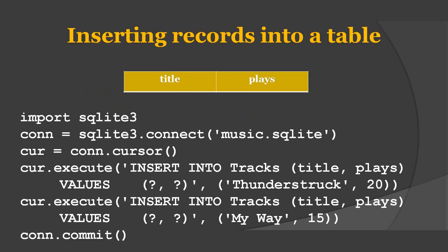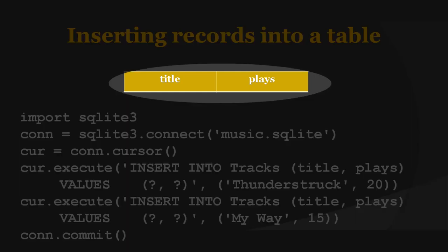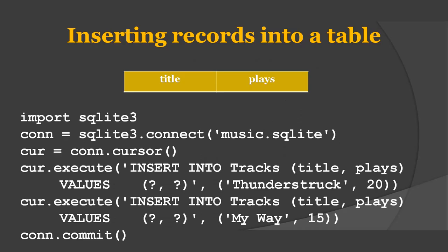Until last class, what we did was we created an empty table having two columns namely title and place, which looked something like this. Today what we will do is we will insert records or data into this table, and we will do this by using an INSERT command.